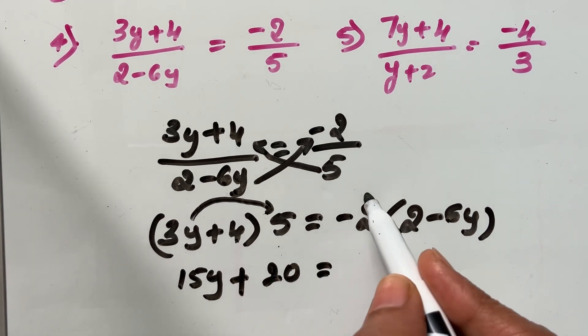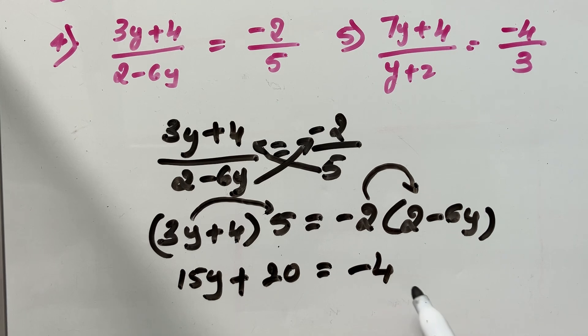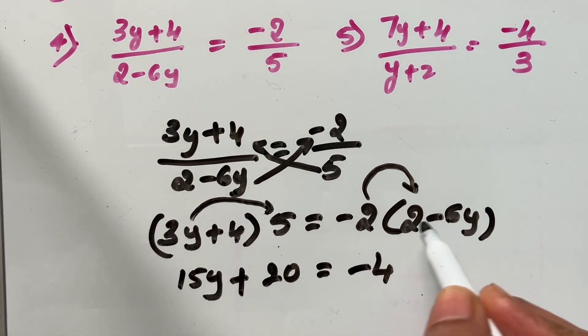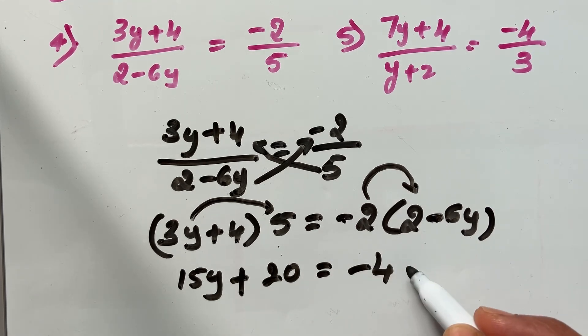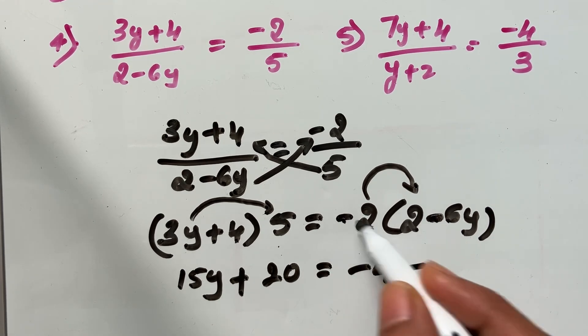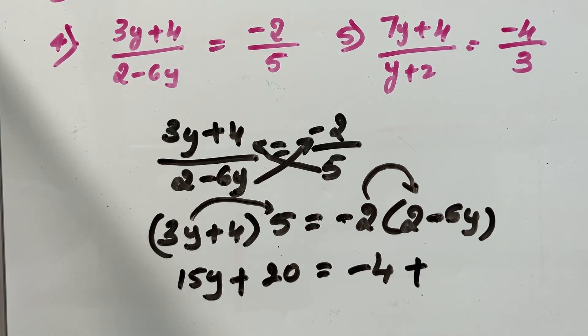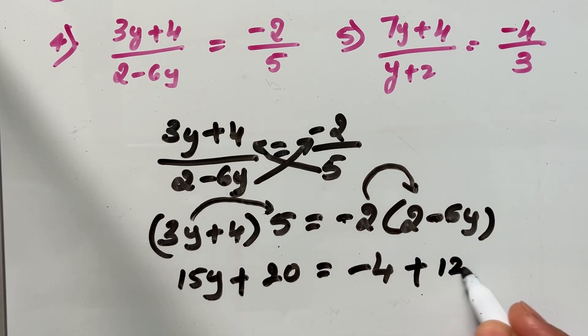Similarly, here negative 2 times 2. Negative 4. Now, negative sign is there. Here also negative sign. Here also negative sign. That means, since it is a multiplication, this will become positive. 2 times 6y is 12y.